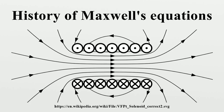Maxwell's contribution to science in producing these equations lies in the correction he made to Ampère's circuital law in his 1861 paper on physical lines of force. He added the displacement current term to Ampère's circuital law, and this enabled him to derive the electromagnetic wave equation in his later 1865 paper A Dynamical Theory of the Electromagnetic Field, and to demonstrate the fact that light is an electromagnetic wave. This fact was later confirmed experimentally by Heinrich Hertz in 1887.